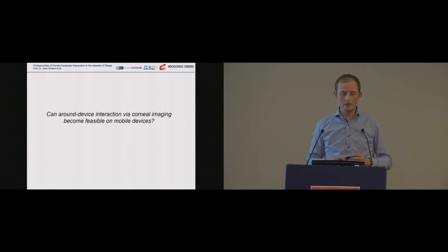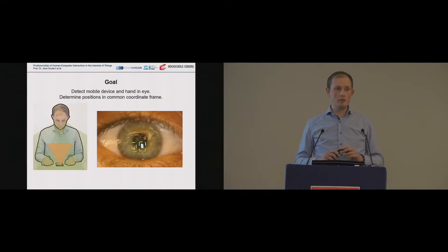So the main research question that we are trying to address here is, can around device interaction become feasible on mobile devices if we use these corneal imaging techniques? And to make it a little bit more precise, what we want to do here is giving an image of the front camera of your smartphone. We want to detect the eye. And in the eye we want to both detect a mobile phone and an interaction device, in this case your hand. And then, once we've detected them, we want to relate them together in a common coordinate frame. And if you know those relative positions, you can basically use a hand as an interaction device relative to your mobile phone.